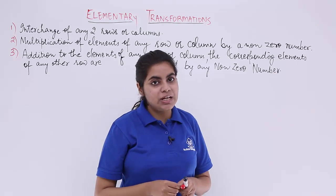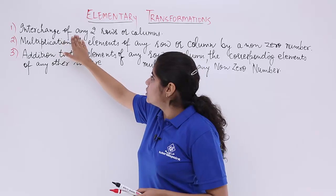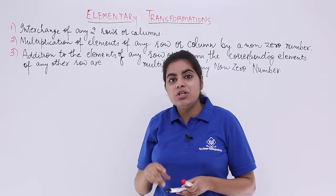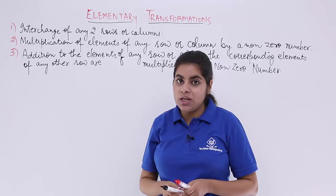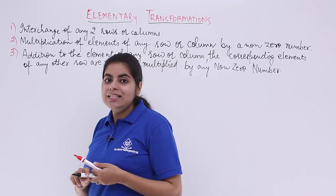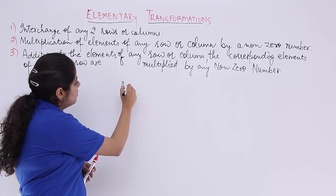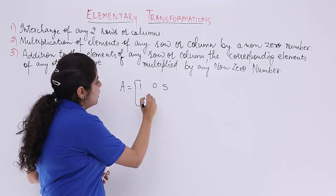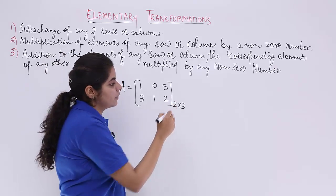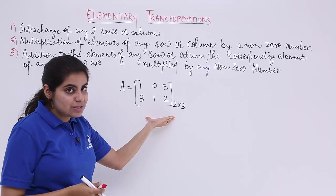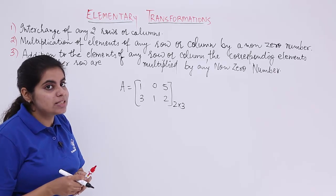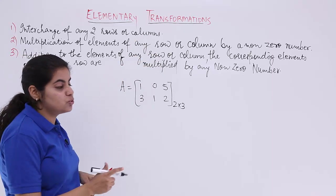Let's understand what the first transformation says. The first transformation is interchange of any two rows or columns. Given a matrix, you can apply two kinds of transformations related to interchange: interchange of any two rows, and interchange of any two columns.